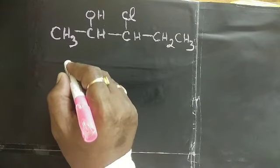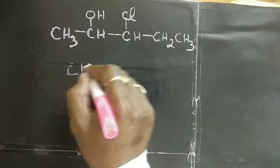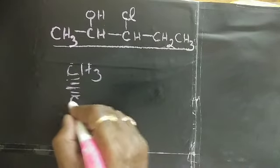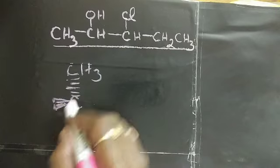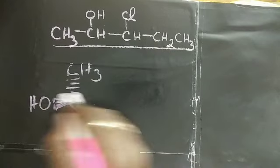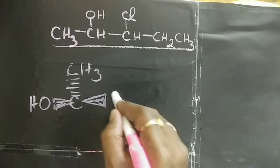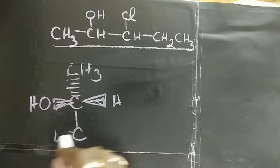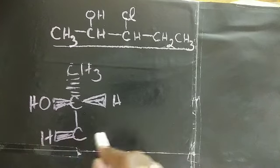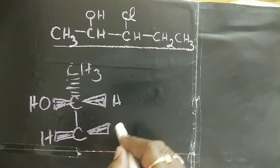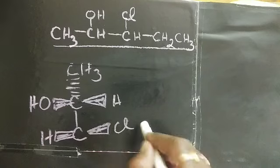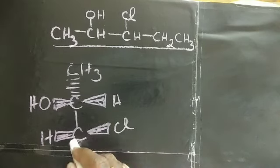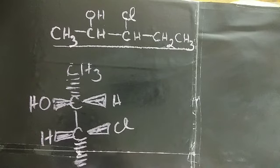So what you'll do: you write CH3 here, the carbon chain is this one, then you write C-OH, H, and C. You just draw randomly HCl and CH2-CH3.